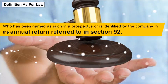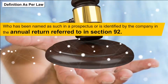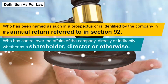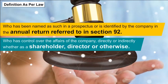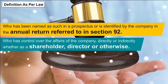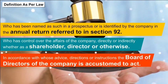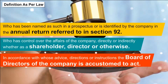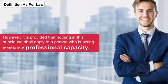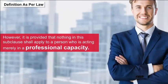Definition as per Law: Under Section 269 of the Companies Act 2013, a promoter is: A) who has been named as such in a prospectus or is identified by the company in the annual return referred to in Section 92; or B) who has control over the affairs of the company directly or indirectly, whether as a shareholder, director or otherwise; or C) in accordance with whose advice, directions or instructions the board of directors is accustomed to act. However, this does not apply to a person acting merely in a professional capacity.